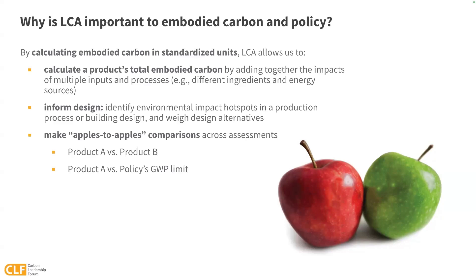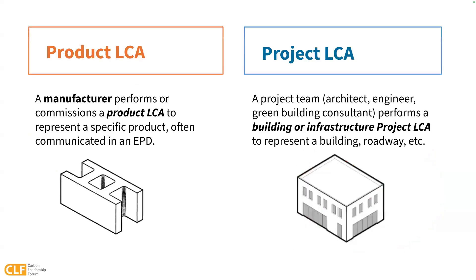LCA can inform design by letting us identify hotspots in a production process or building design, and then weigh design alternatives. It allows us to make apples-to-apples comparisons across assessments, like from one product to another, or between a particular product and a policy's GWP limit. We're particularly focused on the construction sector, so we're mostly looking at LCAs of construction products like concrete, lumber, asphalt, or carpet, or construction projects like a building or a roadway. Module three focuses on product LCA and module four focuses on project LCA.